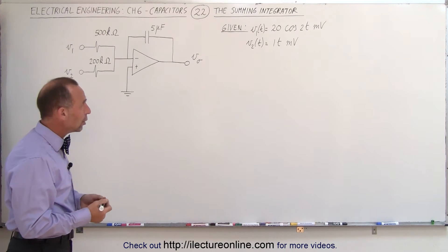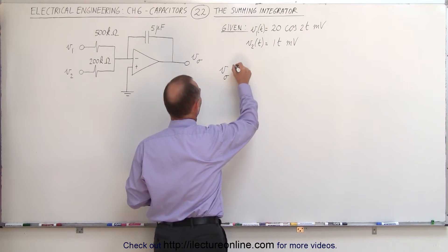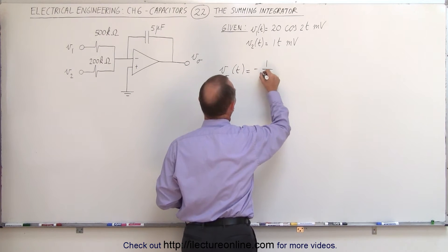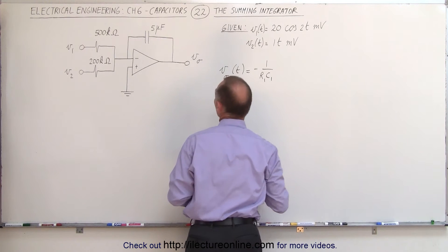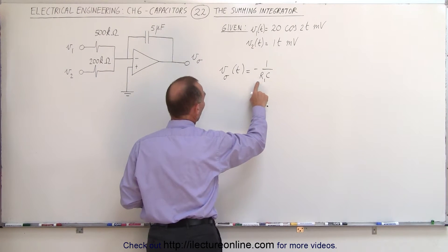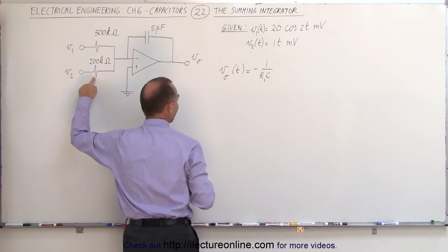And so what we know is that the output voltage, as a function of time, is equal to minus 1 over R1C1. So this would be, well in this case there's only one capacitor, so we'll call it R1C. R1 is the first resistor, R2 is the second resistor,